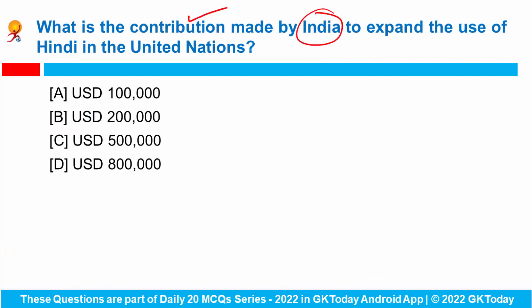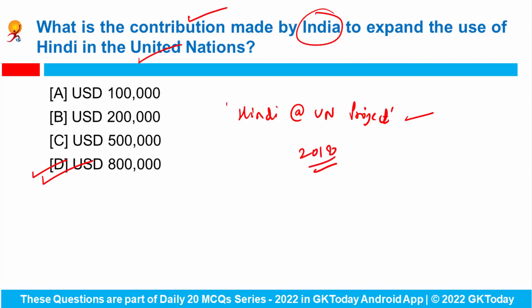What is the contribution made by India to expand the use of Hindi in the United Nations? India has contributed eight lakh dollars towards efforts to expand the use of Hindi in the United Nations. The 'Hindi at UN' project, in collaboration with the United Nations Department of Public Information, was launched in 2018. Its aim is to enhance the public outreach of the United Nations in Hindi and to spread greater awareness about global issues among Hindi-speaking people.